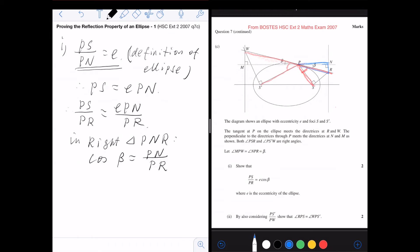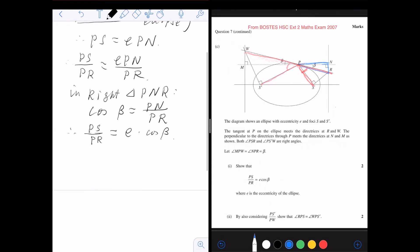So therefore, PS over PR will be equal to e times cos beta. That's it. First question finished.